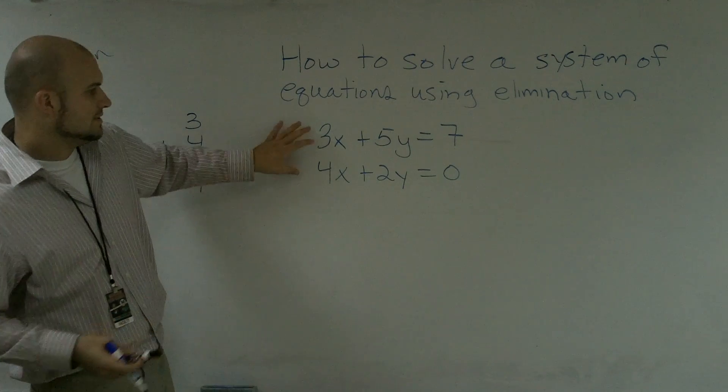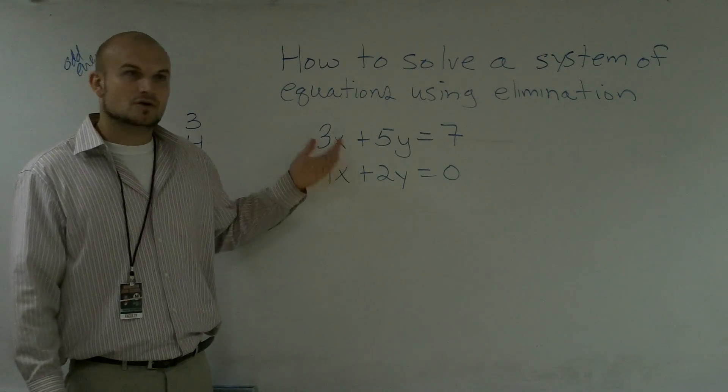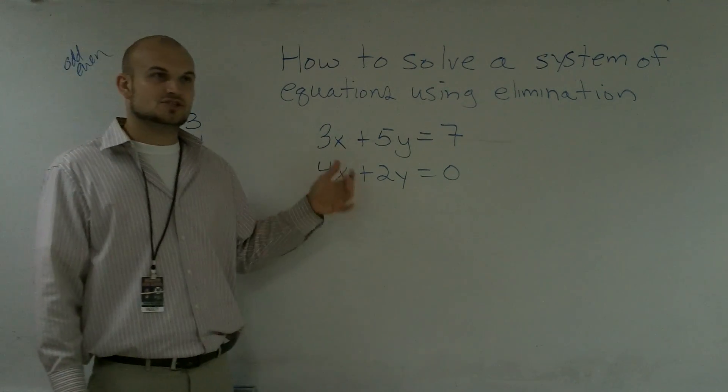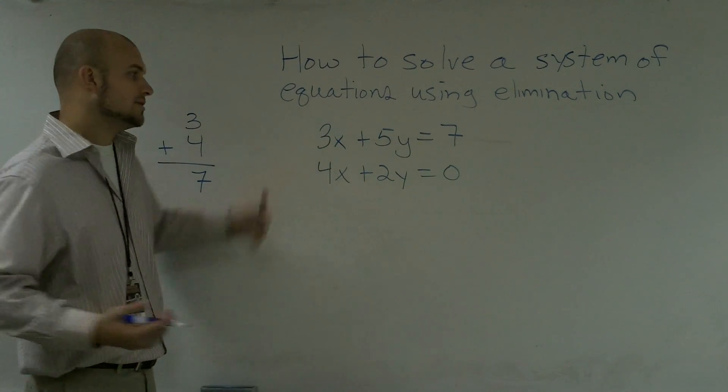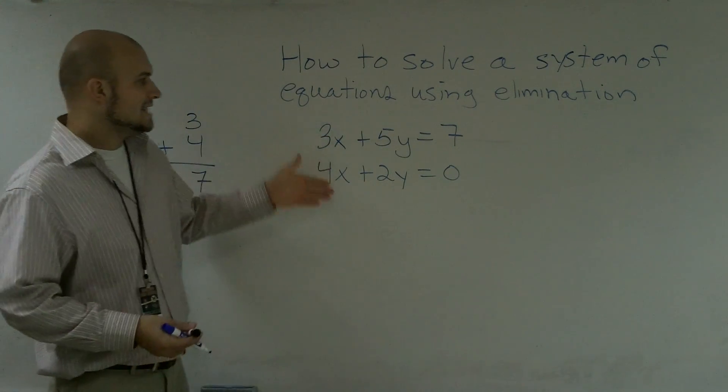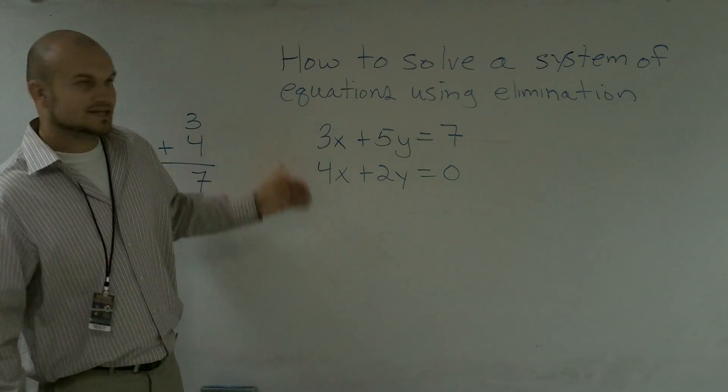Now, the one important thing though is we need to eliminate a variable. So to eliminate a variable, we need to get one of our coefficients to be zero, because zero times anything is going to become zero. So what I need to do is when I add these two equations up, I need to get zero.